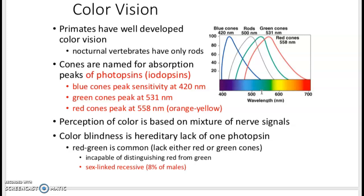Color blindness comes from lack of a photopsin. So individuals might lack either red or green cones, and they have difficulty distinguishing red from green. This is usually only in men because it's genetically linked to the chromosome only found in men.